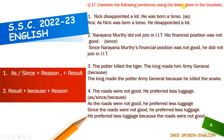Combine the following sentences using the linker given in the brackets. First example: Nick disappointed a lot. He was born without a torso. Using 'as' — what is the reason? He was born without a torso. That is the reason. The result: he disappointed a lot. So we write: as Nick was born without a torso, he disappointed a lot. We keep a comma here.